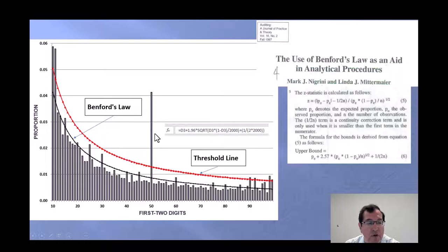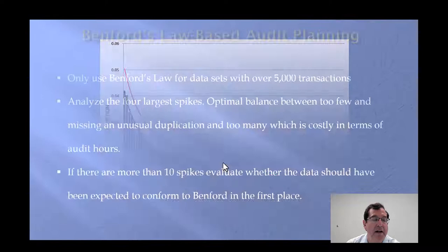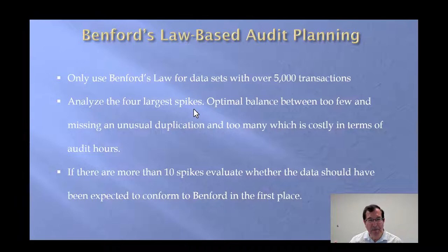Analyze the four larger spikes. And to return back here, a spike is where the actual proportion is above this threshold line. You can see we have seven. We have seven above. In this graph, my suggestion, analyze the four largest spikes. This is the optimal balance between too little work, because we could have a spike due to random fluctuation, and too much work, which is costly. If there are more than 10 spikes, should the data have followed Benford's law in the first place?